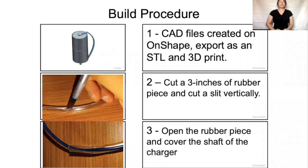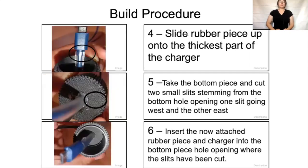Going forward with procedure 1, which is my CAD files — on an STL, we want to export these files and 3D print them. For procedure 2, we want to cut 3 inches of a rubber piece and cut a slit vertically, in order to ensure the user can apply the rubber tubing onto the charger as easily as possible. That is shown in procedure 3. Going on to procedure 4, we want to slide the rubber piece up into the thickest part of the charger, which is where the connector meets the charging cord.